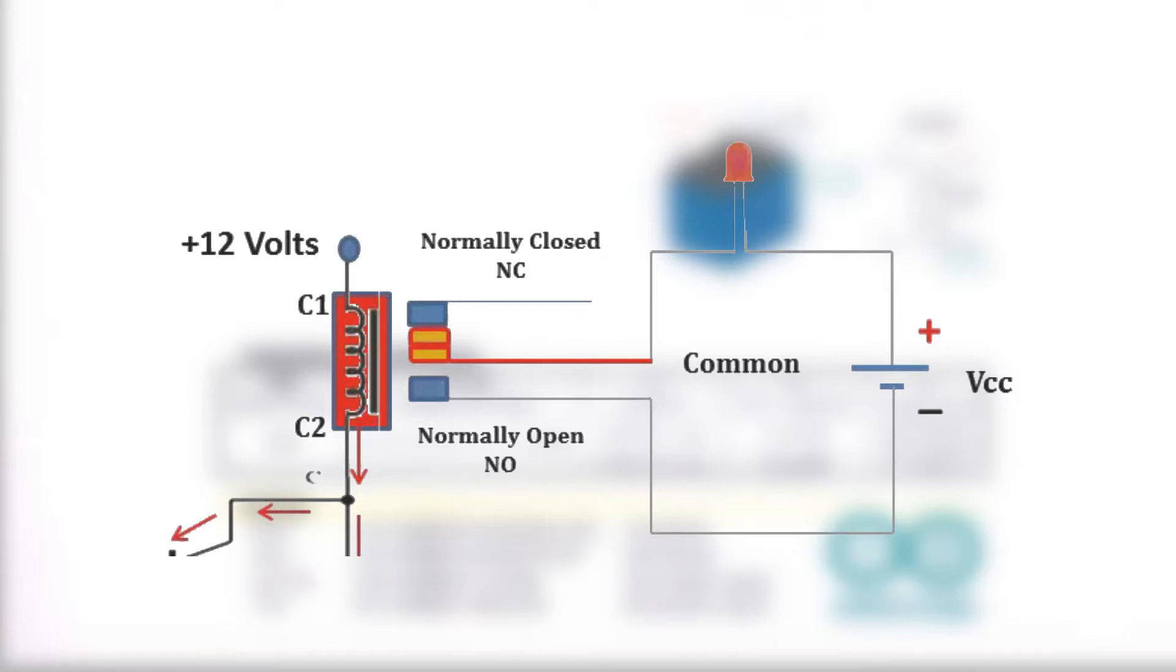When current flows to the coil of the relay, a magnetic field is created that causes the ferrous armature to move, either making or breaking the electric connections. When the electromagnet is energized, the normally open is the one which is on and the normally closed is the one which is off.